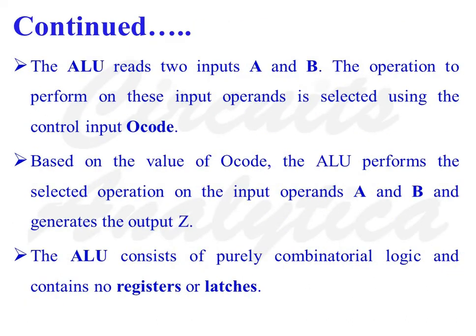The ALU reads two inputs A and B. The operation to perform on these input operands is selected using a control input called Operation Code, or O-Code in short. Based on the value of O-Code, the ALU performs the selected operation on the input operands A and B and generates the output Z. The ALU is purely combinational in nature and does not contain any latch or register.